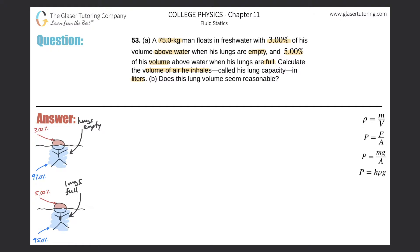We remember a couple of easy formulas. It's best to start with the formula for the fraction submerged: the fraction submerged of an object is equal to the density of that object divided by the density of the fluid in which that object is in.